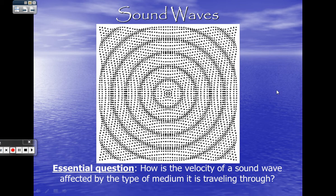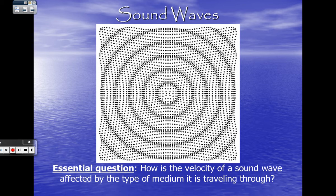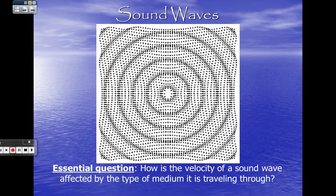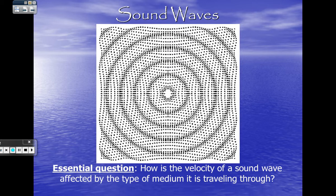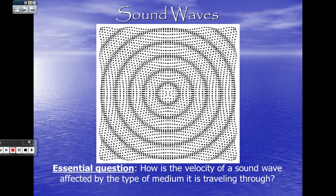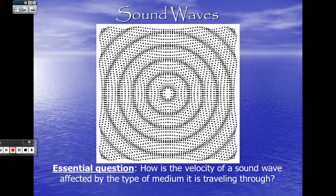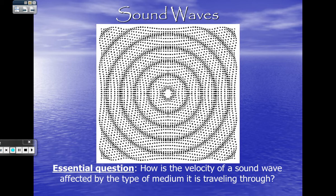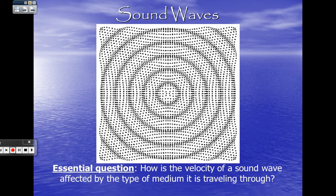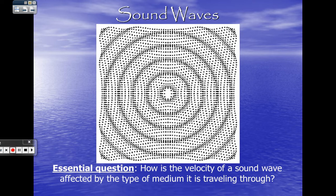Our previous unit was going over waves. Now, what were our two types of waves? There are two types of waves: longitudinal and transverse. We focus on transverse waves mainly on the EM spectrum. Compressional and longitudinal are sound waves, and that's what we're going to put our focus on this unit.